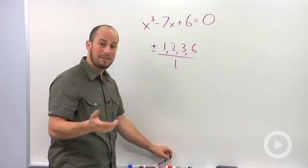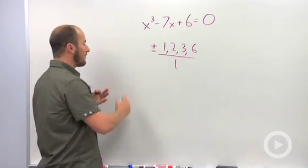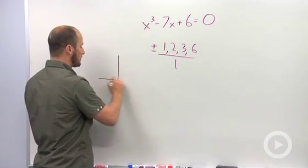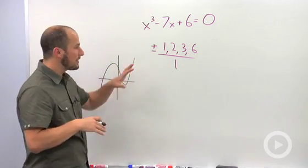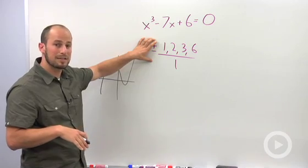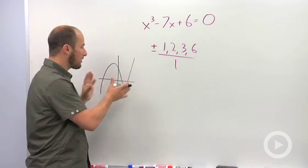So put it in your graphing calculator and the graph for this particular example comes up something like this. So here are our possible rational zeros. But then we also could look at our graph and say,